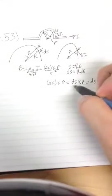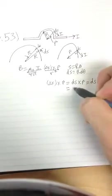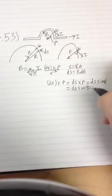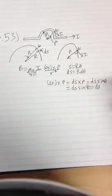Because the current will be tangent to the semicircle, this ends up becoming ds sine 90, which is ds, because sine 90 is 1.